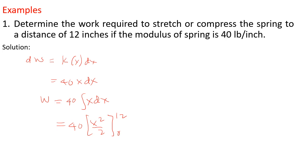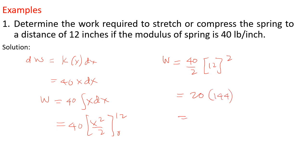Work equals 20 times x squared over 2, evaluated from 0 to 12, giving a result of 2,880.